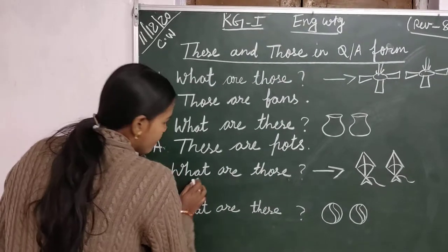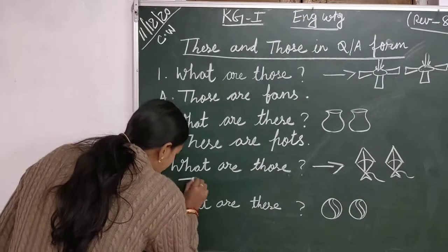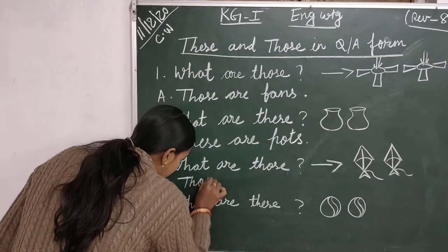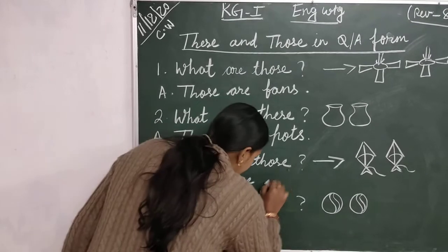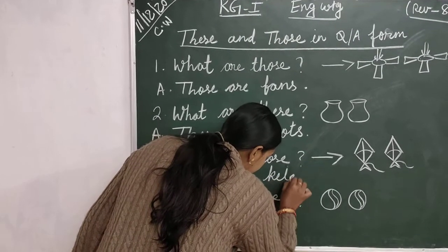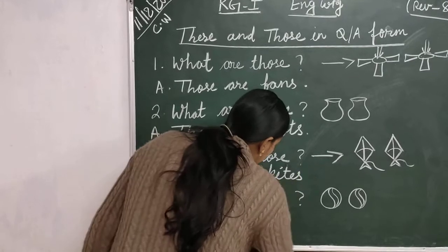Question number 3. What are those? Answer is those are kites. K-I-T-E-S. Kites.